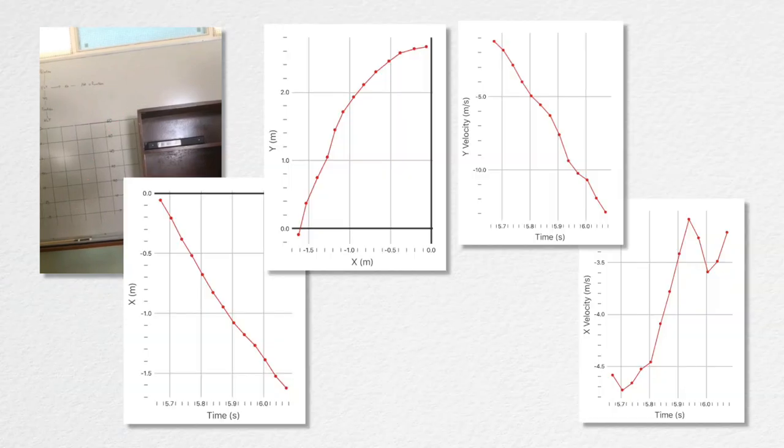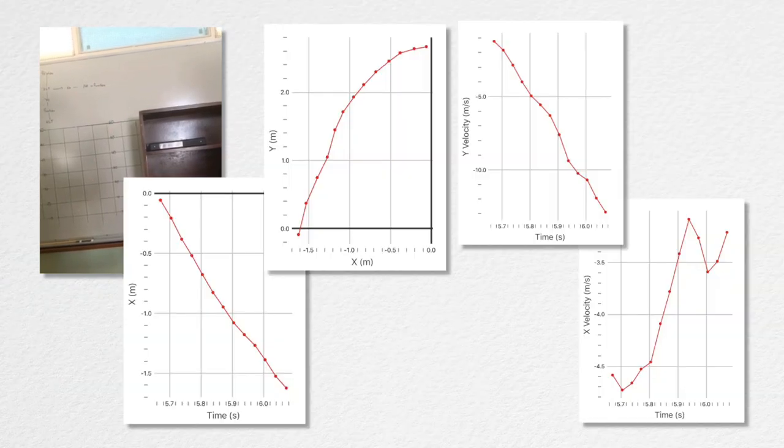I'll get the students to pair up and take a video of some motion, such a projectile motion, and we'll use a 10 by 10 grid as a background. Using the video, the students will be able to determine approximate displacements, and the frame rate of their cameras helps with the change of time.